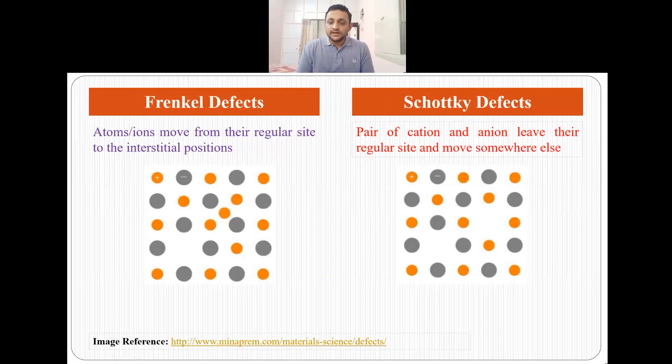There are two other kinds of defects called Frenkel defects and Schottky defects. These defects are usually seen in ionic solids which show a crystalline nature. In Frenkel defects, atoms or ions move from a regular site and they occupy the interstitials. For example, here there was an atom which was present in a regular site and it moved from here to here, and if we have this kind of scenario then we say the material has a Frenkel defect.